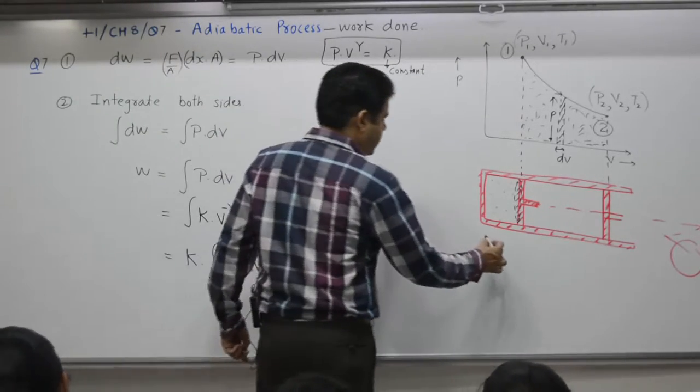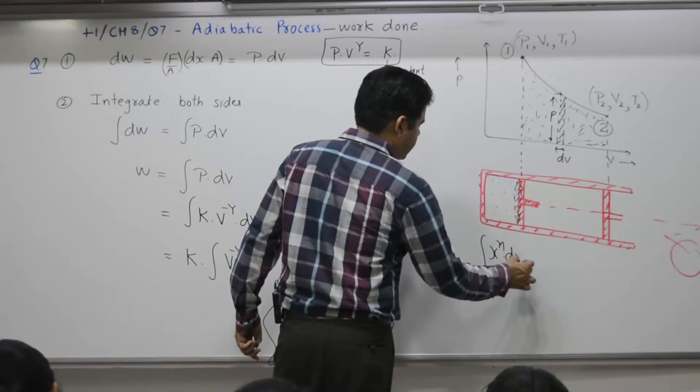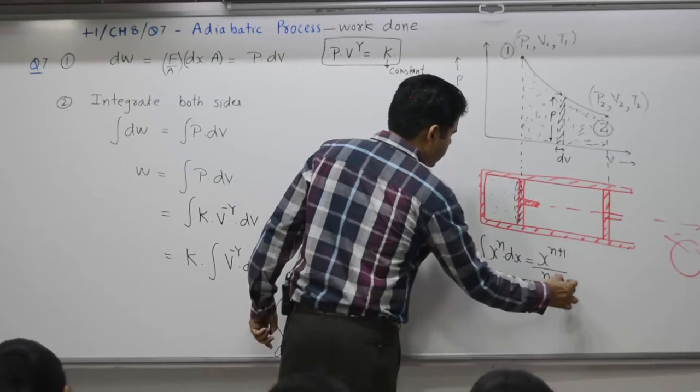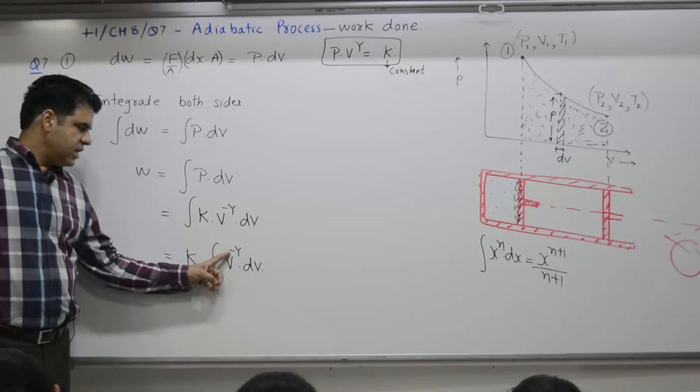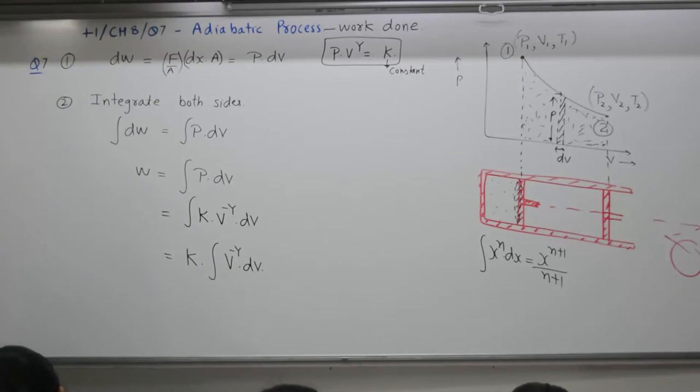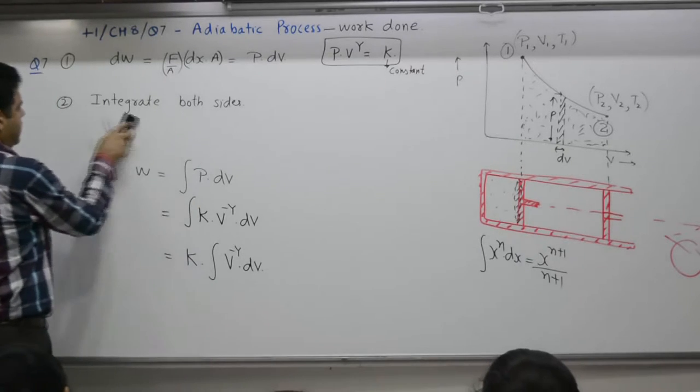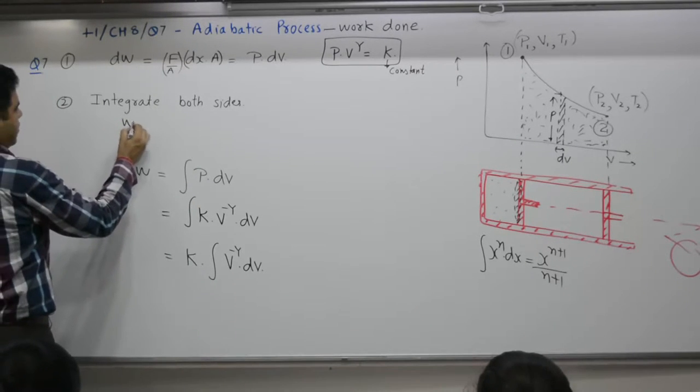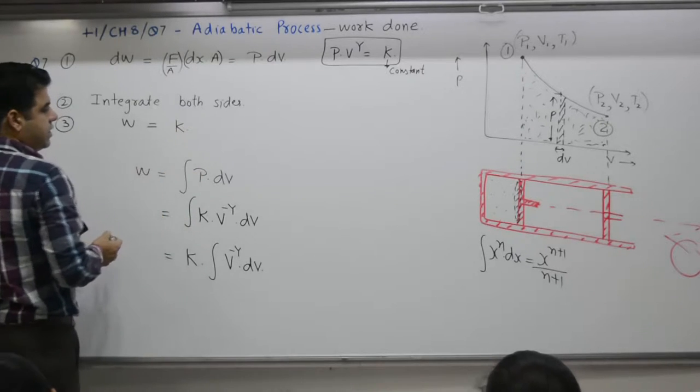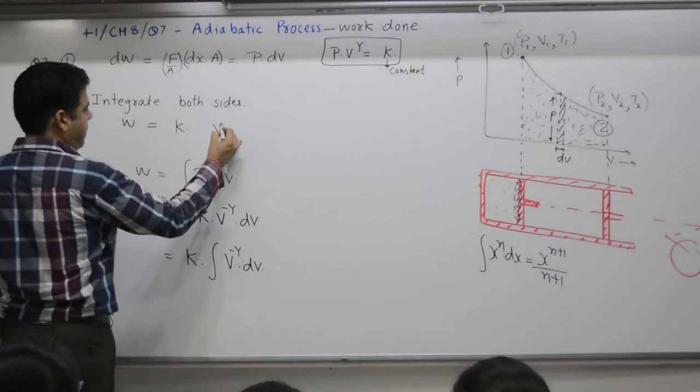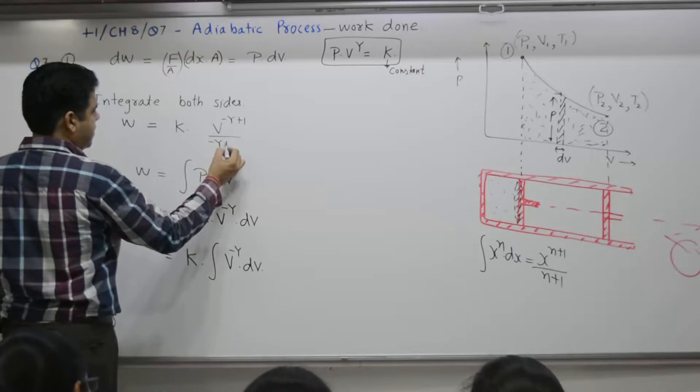Formula: integration of x^n is equal to x^(n+1) over n+1. Apply this formula. V's power here, power is n means minus gamma. Integration means increase the power by 1.